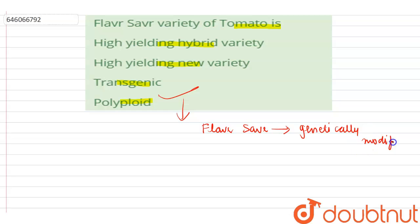It was the first commercially genetically engineered food to be granted a license for human consumption. It was produced by the Californian company Calgene and submitted to the U.S. Food and Drug Administration in 1992.